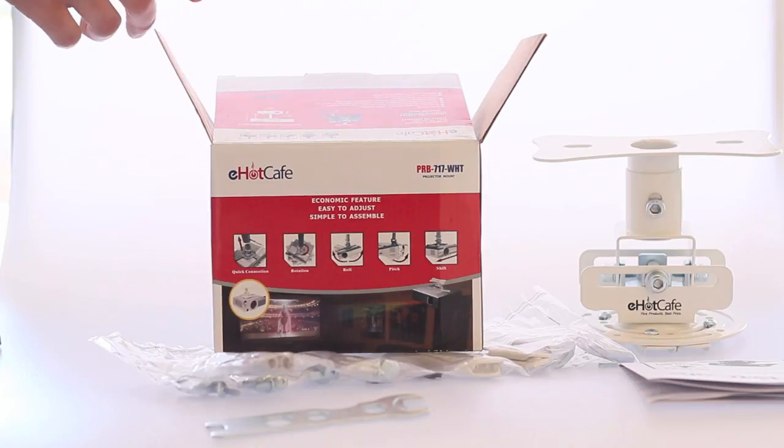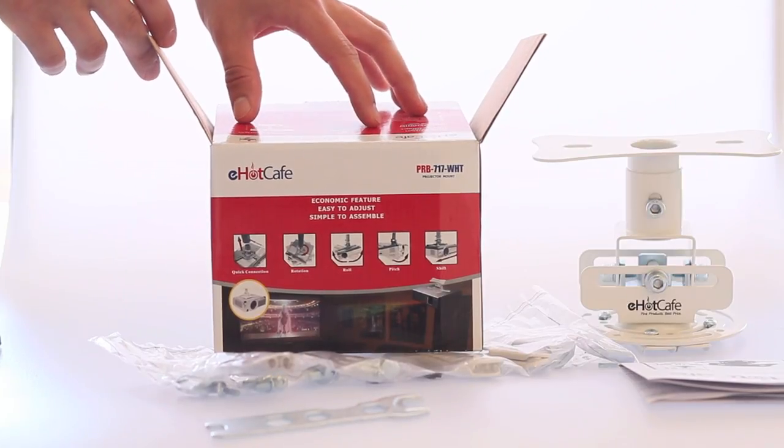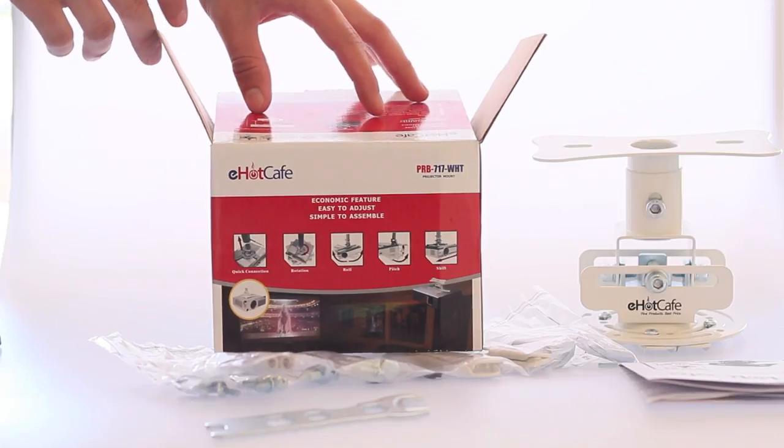This one is a specialty model just because it is flush to the ceiling. You don't need the extension column which is good for your lower ceilings.